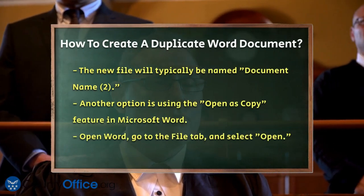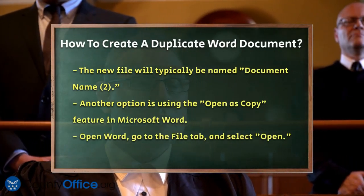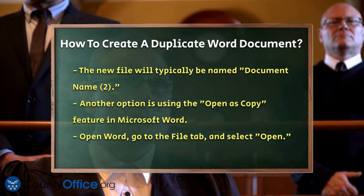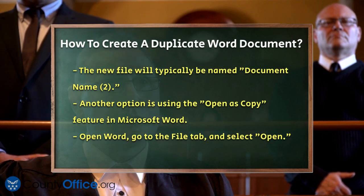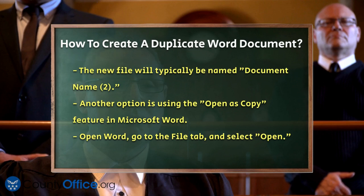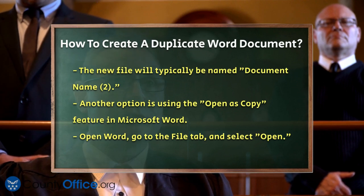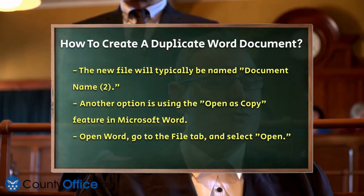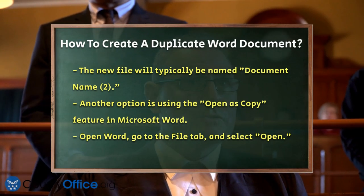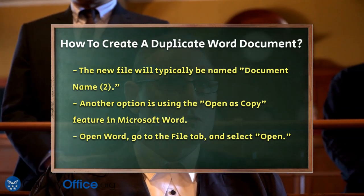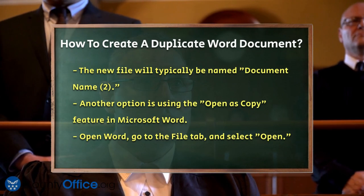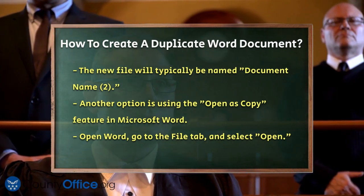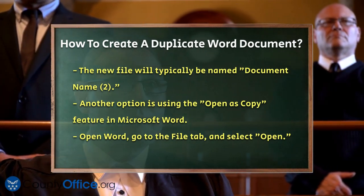Another method is to use the Open as Copy feature within Microsoft Word. Open Word, go to the File tab, and click on Open. Navigate to the document you want to duplicate, right-click on it, and select Open as Copy. This will open a new file named Copy of Document or similar. You can then save this new file by clicking File and then Save As, choosing a location and naming the file as desired.